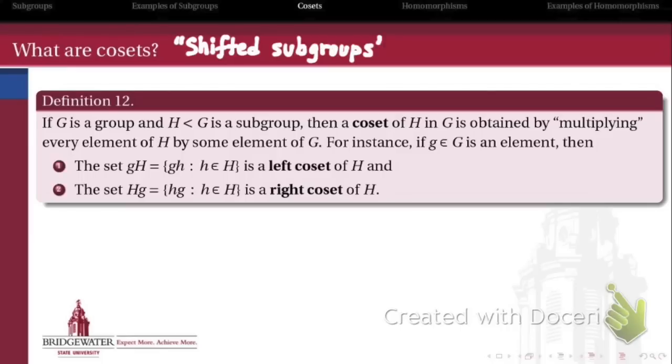So think of these as acting like subgroups. They look an awful lot like subgroups, but they're just shifted in the sense that they need not contain the identity element anymore. We'll see what that means by an example in a second.